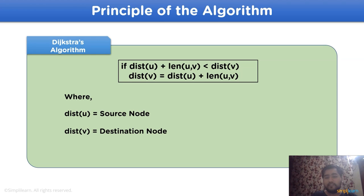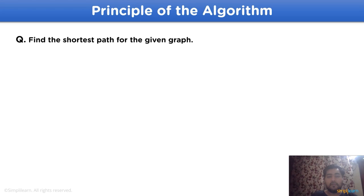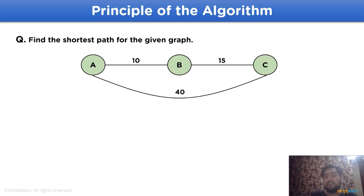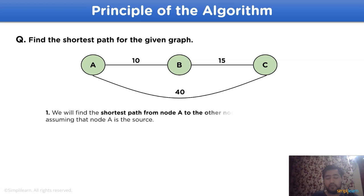To better understand, let's apply this. For the given question, let's find the shortest path. In this example, we have three different nodes: node a, b, and c. Using the previously discussed algorithm principle, we will deduce the shortest path from node a to the other nodes in the graph — that is, the shortest path from node a to node b and from node a to node c.